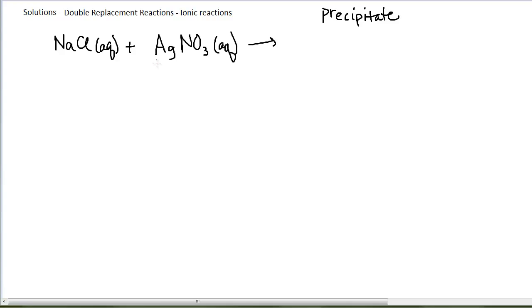The reaction that's happening is the swapping, if you will, of these two ions. The silver plus 1-ion hooks up with the chloride ion, the sodium plus 1-ion hooks up with the nitrate ion.